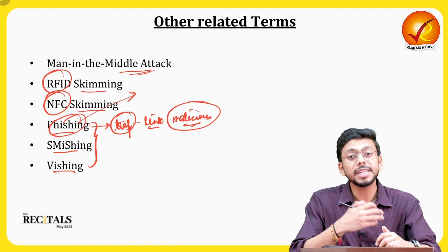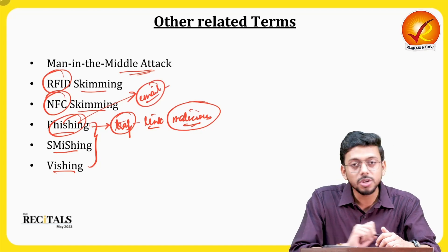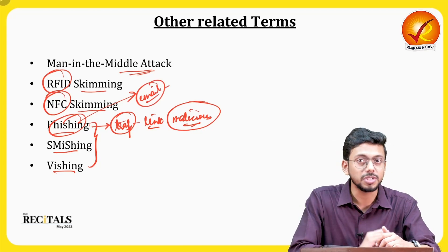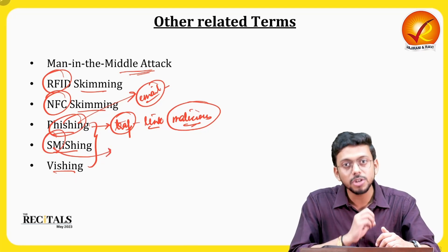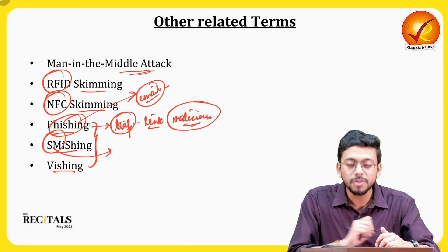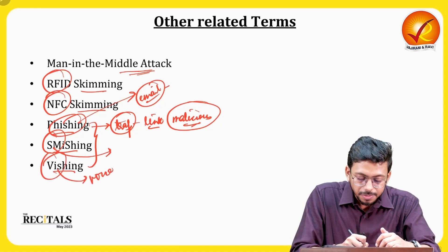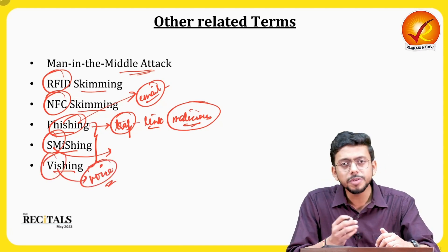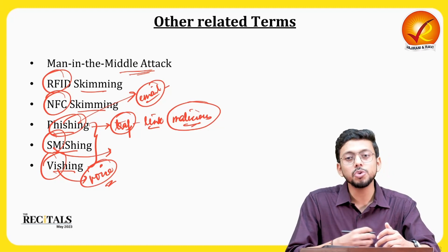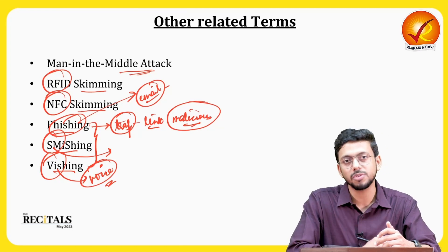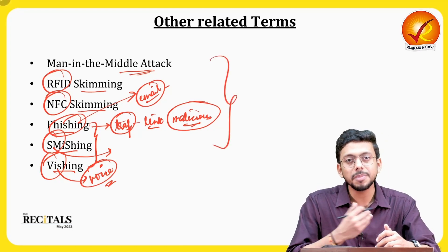In phishing, you might receive a compromised email and click on a malicious link, causing all your data to be transferred. In smishing, you receive a malicious link through an SMS. In vishing, someone calls you — it feels like a call center — and tempts you to share your OTP or other sensitive information over the phone. All these are forms of hacking and cyber crime.